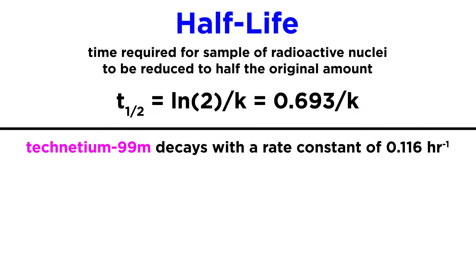Let's try an example. The rate constant for the decay of technetium-99m is 0.116 per hour. What is the half-life? Well, let's plug this in for k in the half-life equation, and we get 5.98 hours. This means that every 5.98 hours, there will be half as many radioactive nuclides as there were one half-life prior.